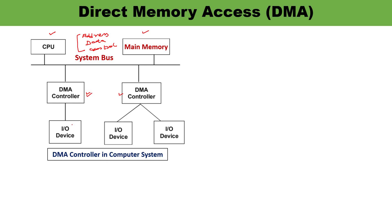The DMA controller is in between, acting as the interface. With a DMA controller, many external devices can be connected. From the first DMA controller one IO device is connected; from the second DMA controller, IO devices are connected — similarly, many more external IO devices can be connected via the DMA controller. When the CPU gives control of the system buses to the DMA controller, direct transfer of data can happen between the IO devices and the main memory.